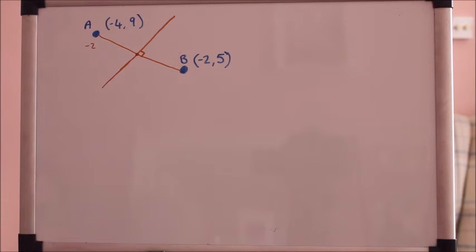So that's the perpendicular bisector. Now I mentioned to find the equation of a straight line you need two things: the gradient and the point that it goes through. Let's look at the gradient first.